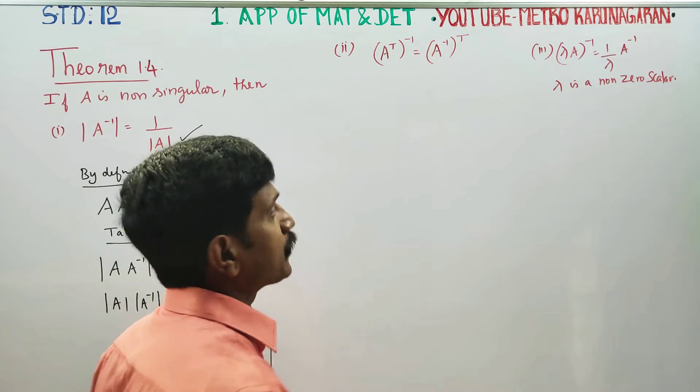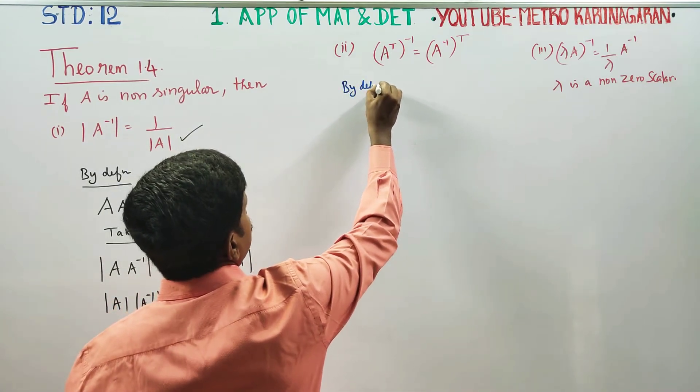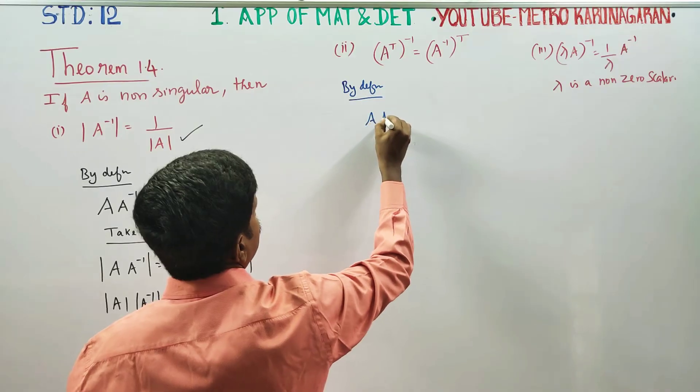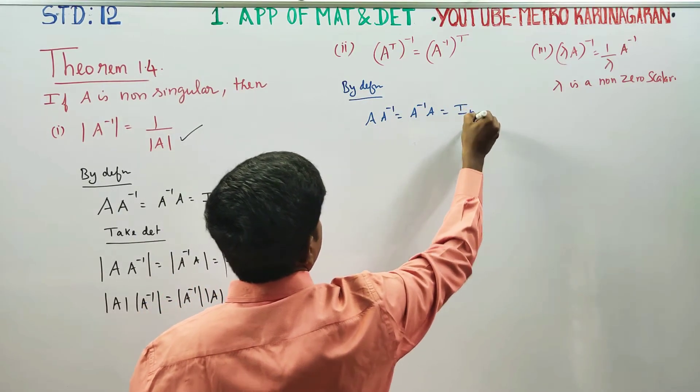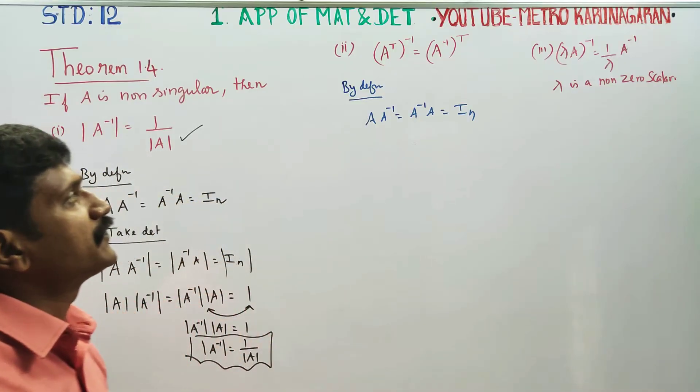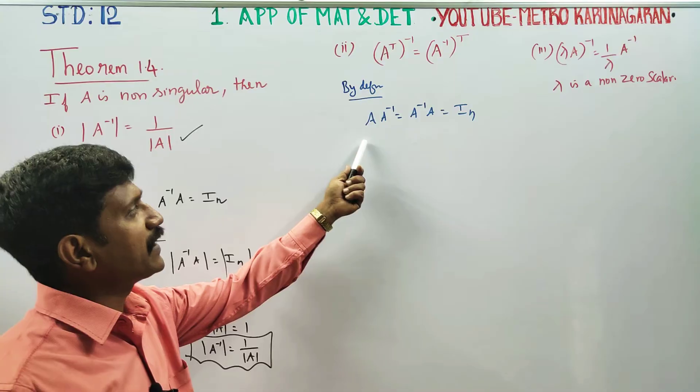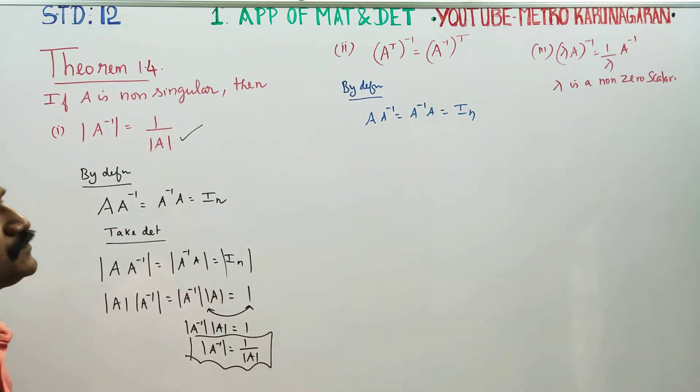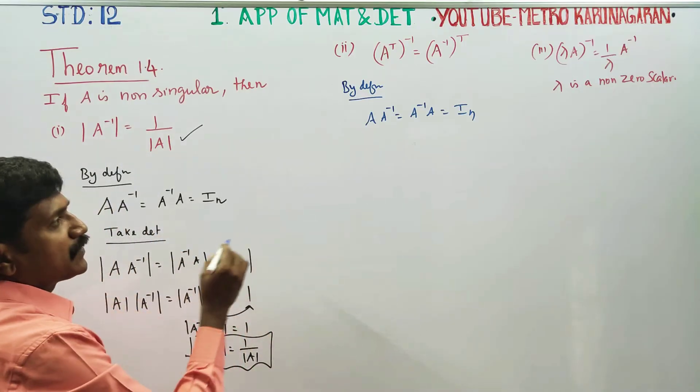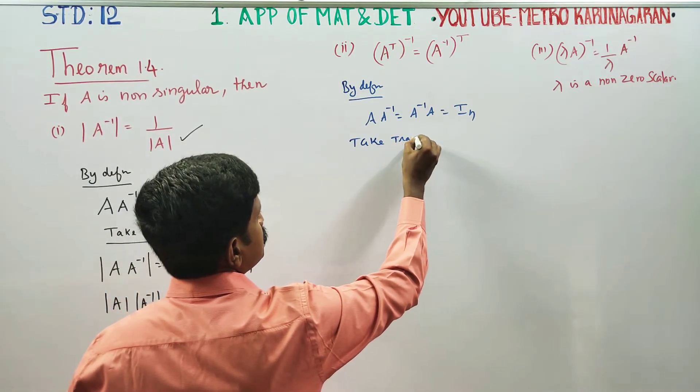Next, second result to prove. Again by definition, A times A inverse equals A inverse times A equals I_n. Now I am going to take transpose for all the terms.